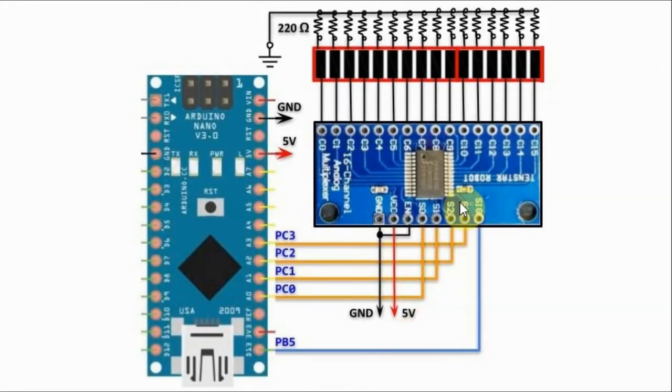The circuit diagram shows the interfacing of the switch module with Arduino, where the select lines S0 to S3 are connected to the least significant nibble of port C, the common signal line is connected to pin PB5, and the 16 output lines are connected to a 16-bit bar graph display.